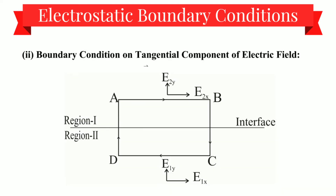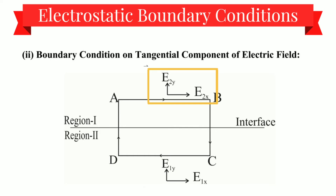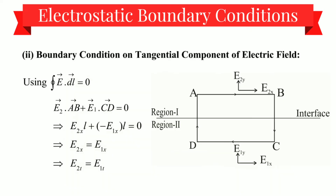Let us imagine a rectangular path ABCD as shown in the diagram. Segments BC and DA are made extremely small and their contribution to the line integral is negligible. Here we have two regions, region 1 and region 2, with an interface and electric field components e2y, e2x, e1y, and e1x. Using the closed integral E·dl equals zero, we can write it as E₂·AB plus E₁·CD equals zero.